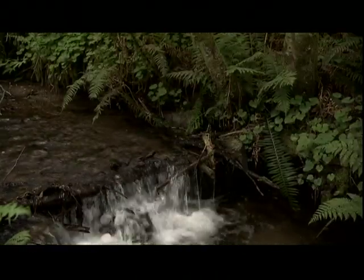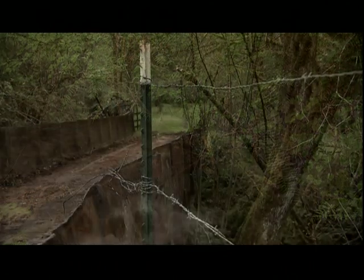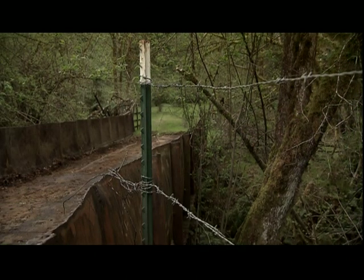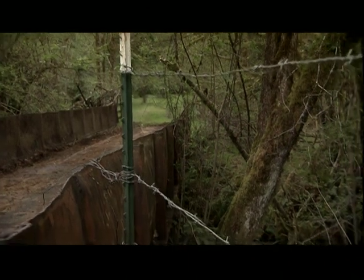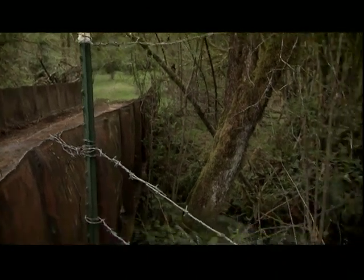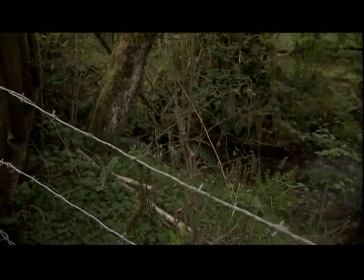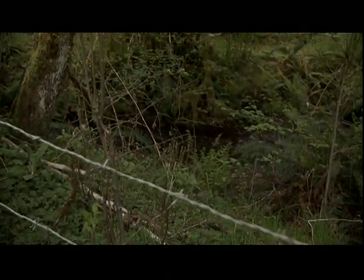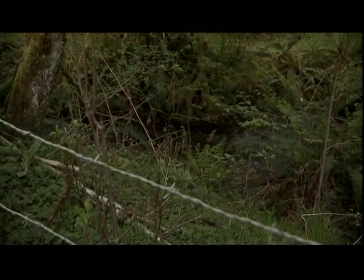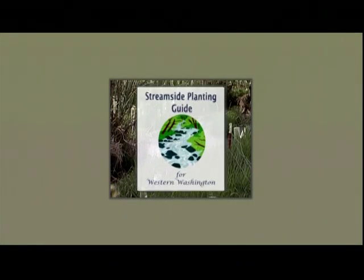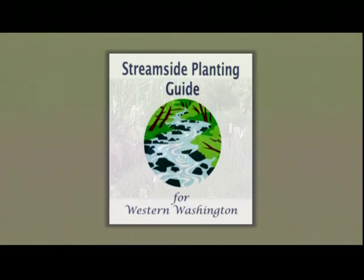The roots of trees and shrubs help stabilize stream banks. They also hold water, releasing it slowly throughout the season, recharging groundwater and helping maintain stream flows during the summer months. The publication Streamside Planting Guide for Western Washington provides comprehensive information and is available free online.